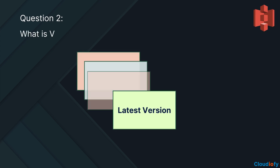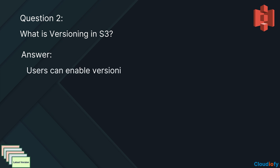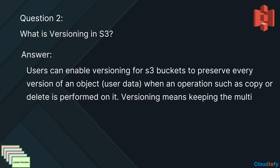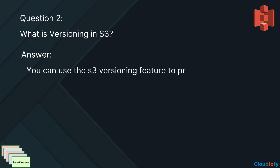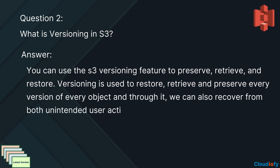The next question is: what is versioning in S3? Users can enable versioning for S3 buckets to preserve every version of an object when an operation such as copy or delete is performed on it. Versioning means keeping multiple forms of an object in the same S3 bucket. You can use the S3 versioning feature to preserve, retrieve, and restore every version of every object, and through it we can also recover from both unintended user actions and application failures.